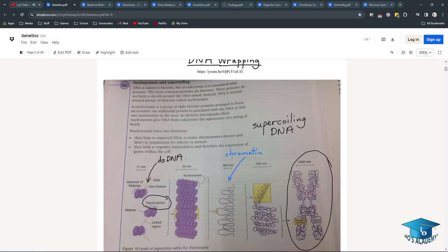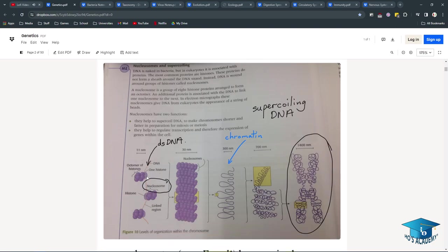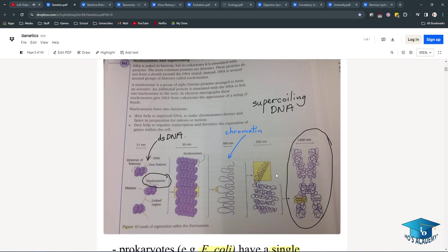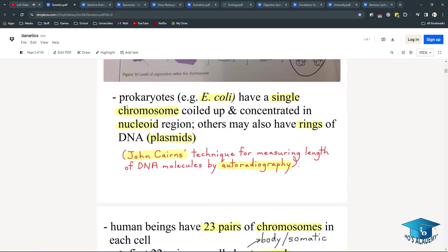DNA wrapping. There's this short part about how DNAs are wrapped into histones using proteins and supercoiling DNA. Chromatin, and this is like the size. This is a chromosome. Prokaryotes, like E. coli, have a single chromosome, coiled up and concentrated in the nucleoid region. And others may also have rings of DNA called plasmids.